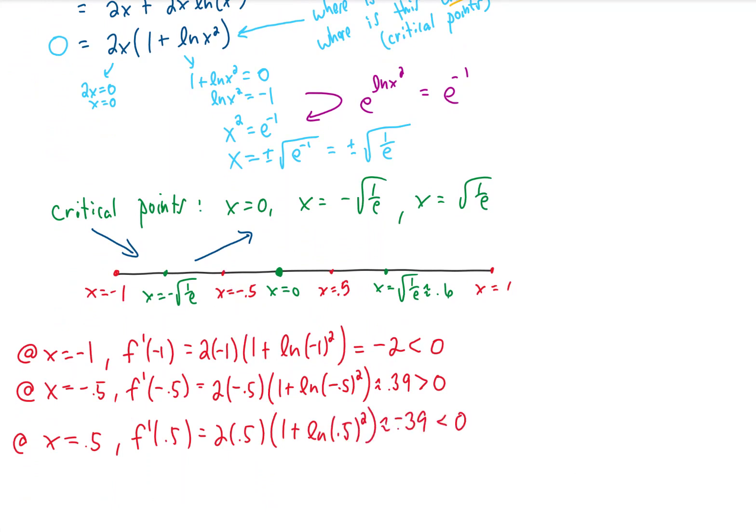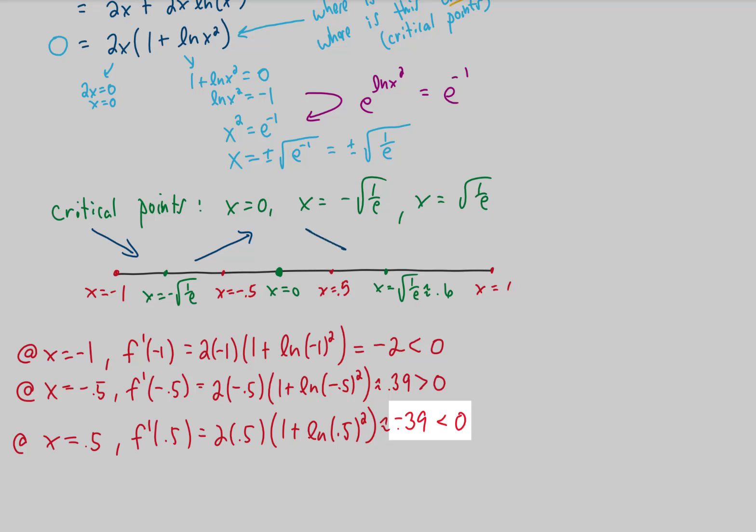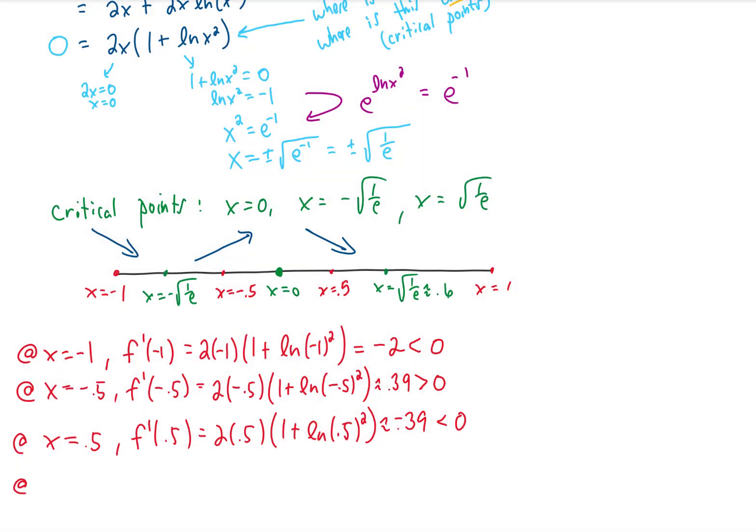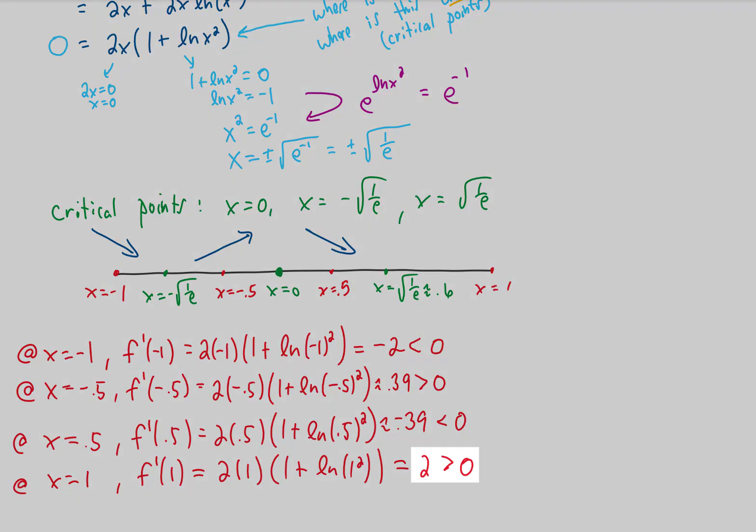At x equals 0.5, I'm getting that our first derivative is negative, which means that our function is decreasing on that interval. And one more. Plugging in x equals 1 into our first derivative gives us a positive value, which tells us that our original function is increasing on that interval.